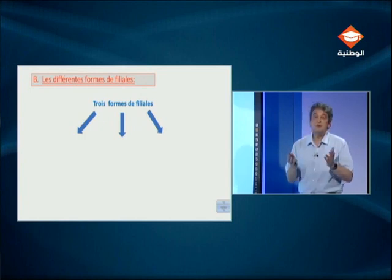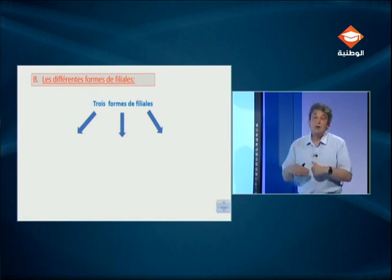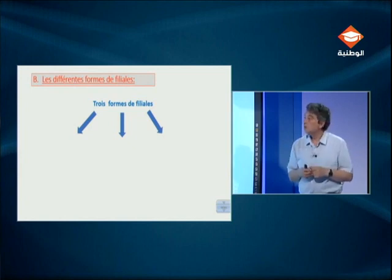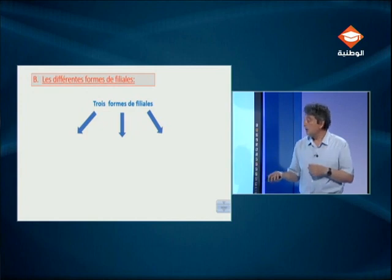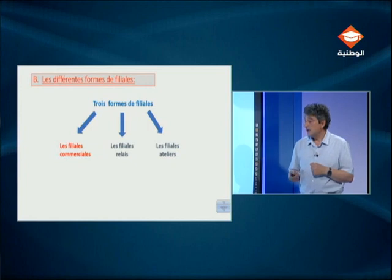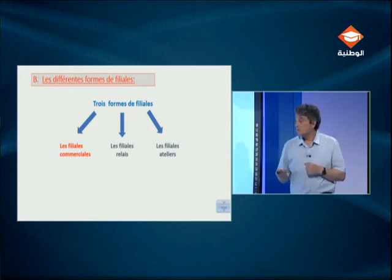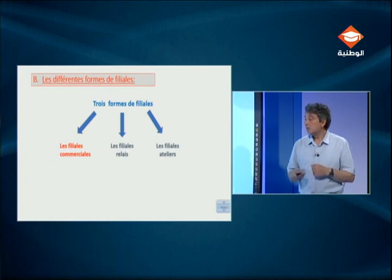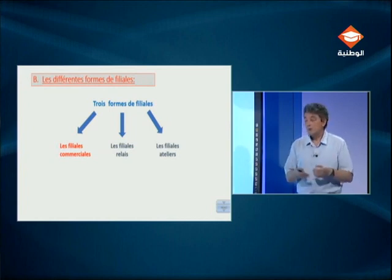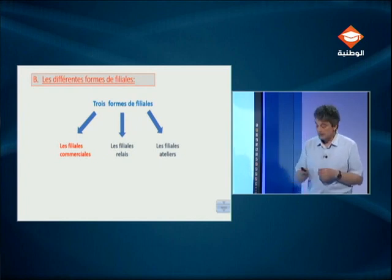On n'a pas une seule forme de filiale. En tout, il y en a trois : les filiales relais, les filiales ateliers et les filiales commerciales, chacune liée à certains objectifs poursuivis par la firme multinationale. Au cours de cette séance, on va se contenter des filiales commerciales, c'est-à-dire voir de quoi il s'agit et pourquoi une firme multinationale implante ce type de filiale.